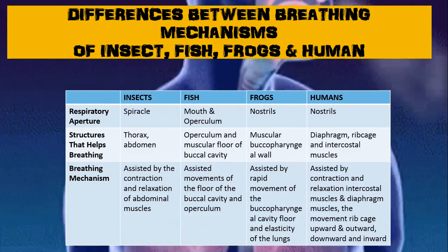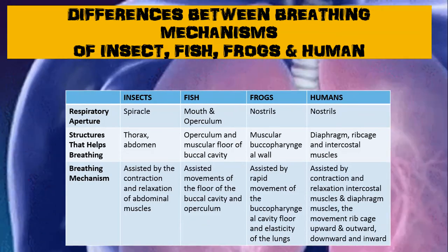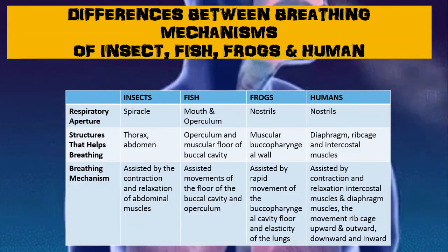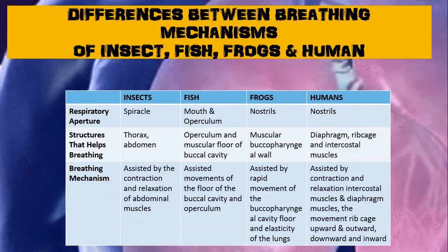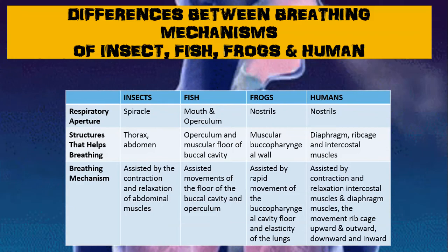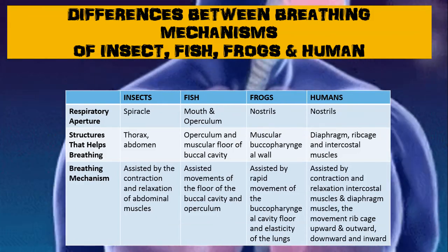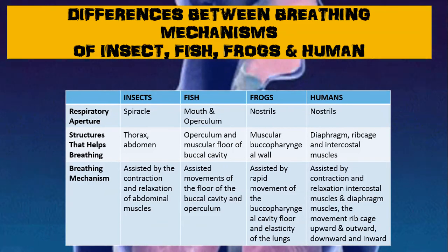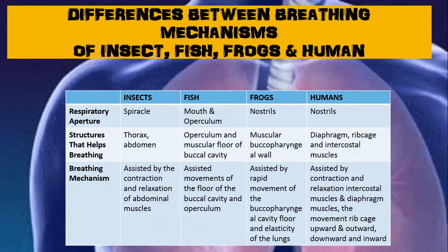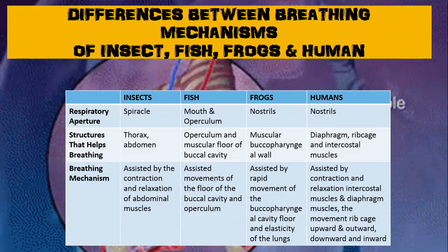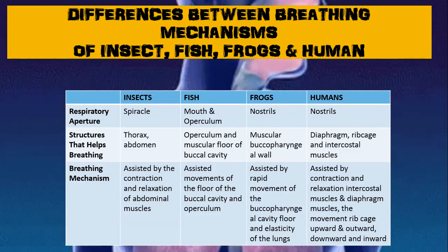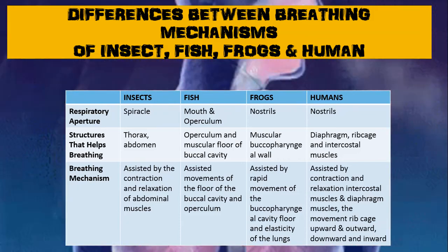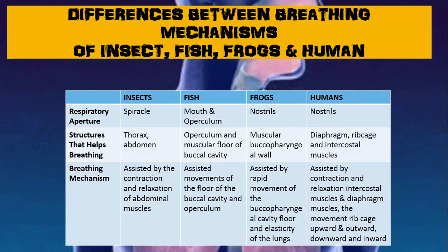For humans, the structures are the diaphragm, rib cage, and intercostal muscles. The breathing mechanism in insects is assisted by contractions and relaxation of the abdominal muscle. For fish, it is assisted by movements of the floor of the buccal cavity and operculum. Frogs are assisted by rapid movements of the buccal pharyngeal cavity floor and elasticity of the lungs. Humans are helped by the contractions and relaxation of intercostal muscles and diaphragm muscle, and movements of the rib cage upward and outward or downward and inward.